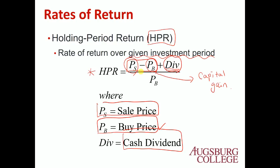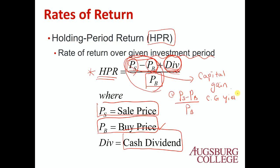So we have the capital gain and the dividend, divided by our investment seed money — the buy price PB — to get the Holding Period Return. The HPR has two components: the first is the capital gain yield, which is (PS minus PB) divided by PB. The second is the dividend yield, which is the dividend divided by the buy price.